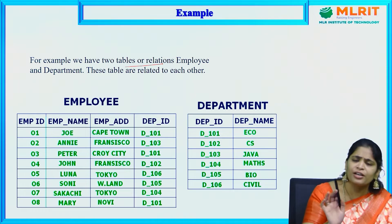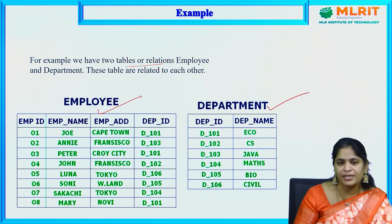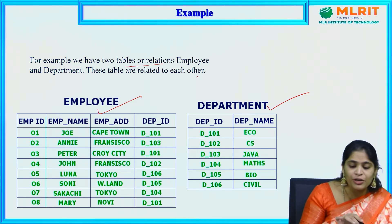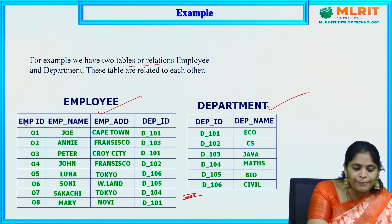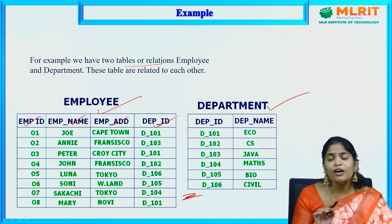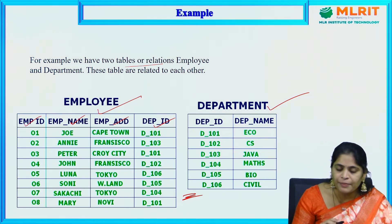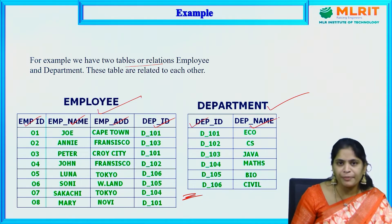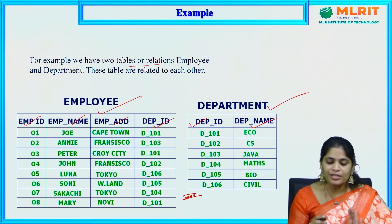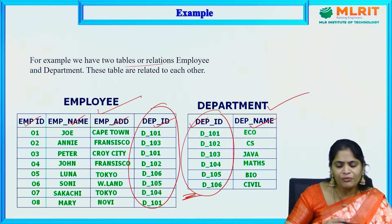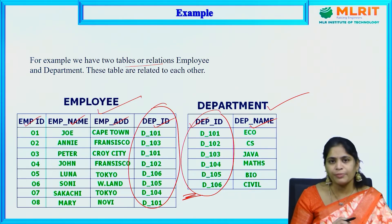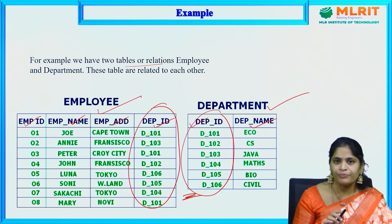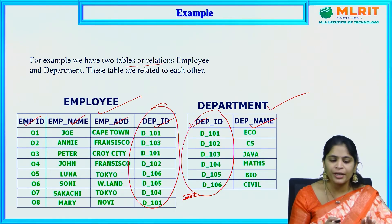For example, we have two relations: employee and department. The employee table consists of employee ID, employee name, employee address, and department ID. The department table has department ID and department name. We can relate these two because of the common column — department ID — which is present in both tables. By using this column as the cluster key, I can join these two tables into one relation, which we call a cluster — grouping the same kind of elements into a single block.